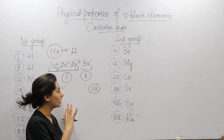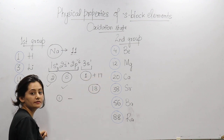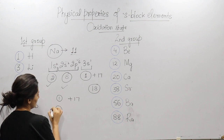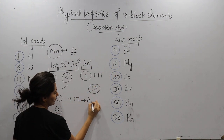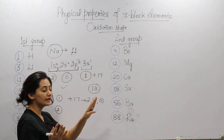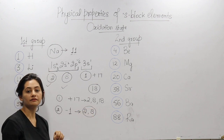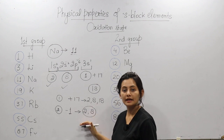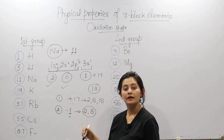The first situation: we add 17 electrons to reach a stable configuration of 2, 8, 18. The second situation: we remove this 1 electron, and we get 2 and 8, which is also a stable configuration. Now think — which situation is right? Whenever we remove or add electrons, we need energy. To add 17 electrons requires a lot of energy, which is a big task compared to removing just 1 electron. So it is better to remove one electron.